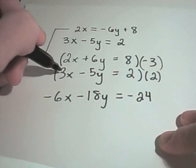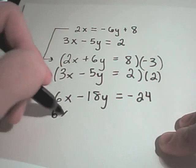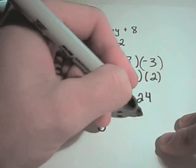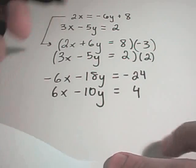On the second row, again, I'm multiplying everything by 2. I'll get 6x, minus 10y, and positive 4. And the reason I did that was because now my x's are going to cancel out when I do this addition.